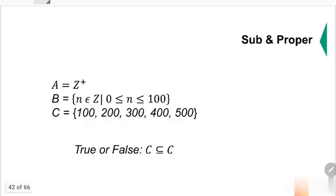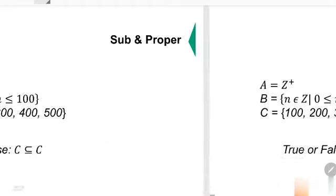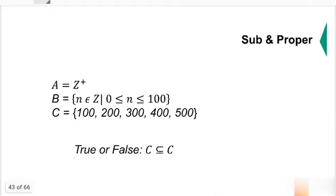C is a subset of C. C is a subset of itself. Of course, that's true. Whatever is in C can also be found in C. That's what this is saying. So this is true. Any set is a subset of itself. We solved that.